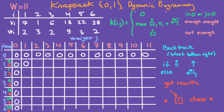Now when the total weight is 2, the item weight is also 2, so it is possible to select this item — we're in the 'enough weight' category. You take the max of two values: the number at the top (which is 0), and vi plus a lookup. Vi is 7 (the green numbers are values, red numbers are weights). The lookup means: move up once, then move left w times — here that's two times — giving you 0. The max of 0 and 7 is 7.